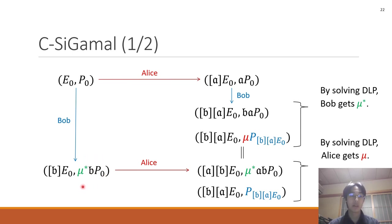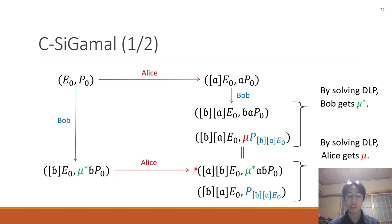And Bob sends to Alice only this set as a ciphertext. And Alice computes this action and she gets this set. And this set equals this set. And Alice computes this blue point, and by solving this discrete logarithm problem, Alice gets the secret message μ. This is CC-GAMMA.